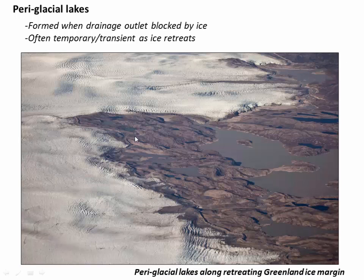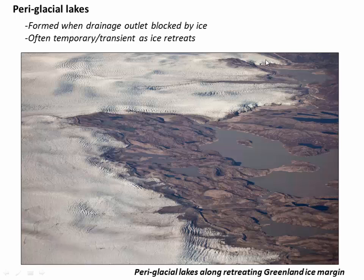Lacustrine silts and clays are usually deposited in what are called paraglacial lakes — lakes that form right at the edge of the ice sheet. As the ice pulls back, it temporarily blocks outlet rivers or canyons and traps lakes behind the ice. This lake wants to drain down a pre-existing channel, but the ice tongue is blocking it. As ice sheets pull back, we usually get complicated multiple generations of lakes that are transient — in a few years the ice moves and these lakes drain.